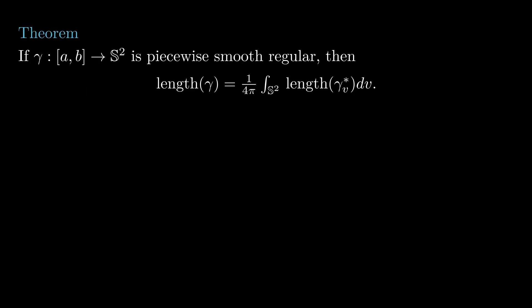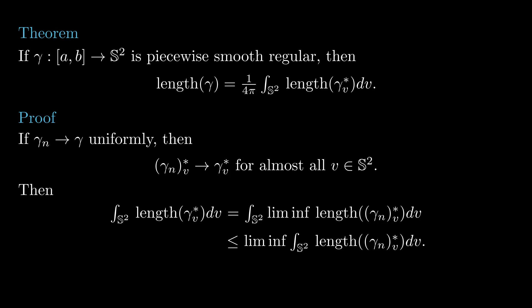Now we go back to the formula. All the properties listed in the theorem are straightforward to verify, except maybe the one about lower semi-continuity. If a sequence of spherical curves gamma n converges uniformly to a piecewise smooth regular curve gamma, for any v not in the image of gamma, the sequence gamma n v star converges to the curve gamma v star. By the lower semi-continuity of length, combined with Fatou's lemma, we get the lower semi-continuity of the integral expression. And by the theorem we just discussed, this implies that the formula holds for all piecewise smooth regular curves.